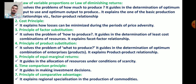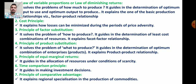The fourth principle, product substitution, solves the problem of what to produce. The first principle deals with how much to produce, the third with how to produce, and the fourth with what or which product to produce. It guides the determination of the optimum combination of enterprises and explains the product-product relationship.